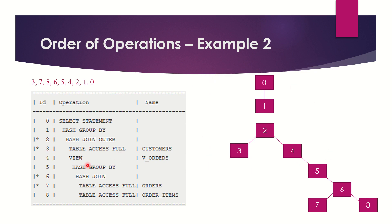Now we'll look at the further operations, that is 5 to 8. Operation 5 is again a child of parent operation 4, so I will write 5 under operation number 4. Now 6 is a child of 5, and since 6 is indented towards the right I will write 6 under the fifth operation.